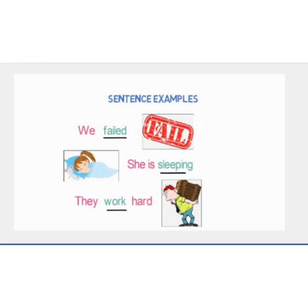I hope the definition of transitive and intransitive verbs is clear. To revise once again: all those actions that have a receiver or object at the end are known as transitive verbs, and all those actions that have no receiver or object at the end are intransitive verbs. I hope this video will be helpful for you. Please leave a comment below so I can improve. Thank you.